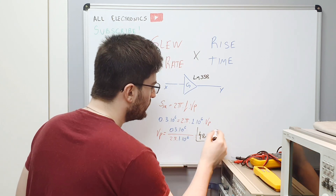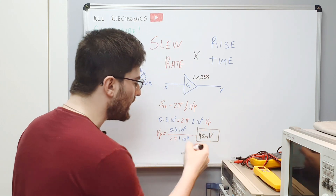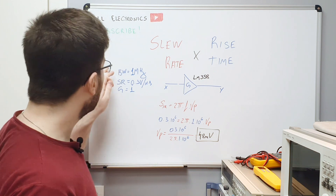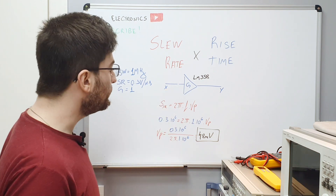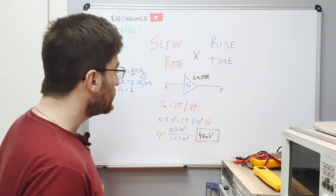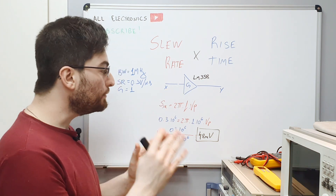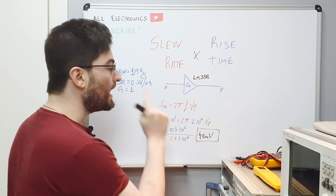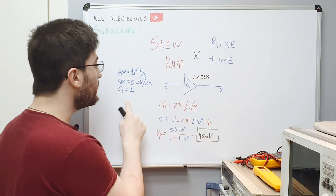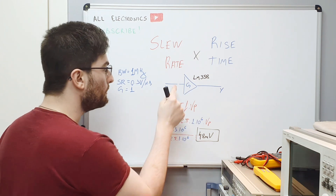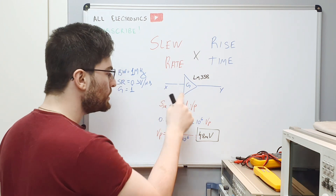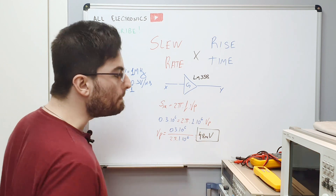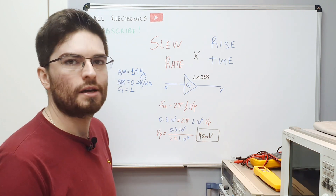So to utilize all the bandwidth of the LM358, the maximum peak voltage we can have on a gain-of-1 buffer stage is 48 millivolts.